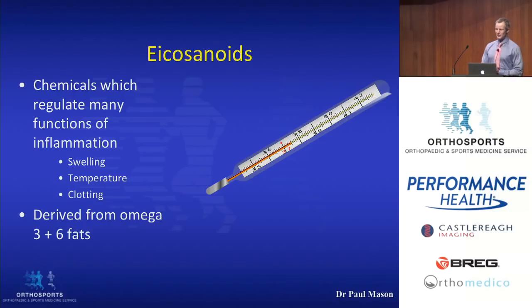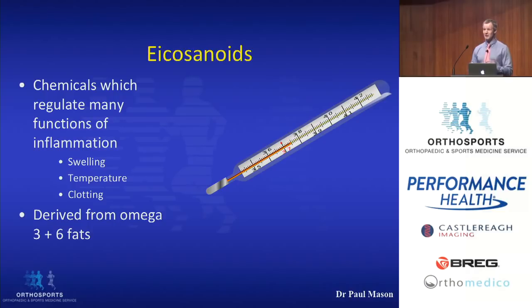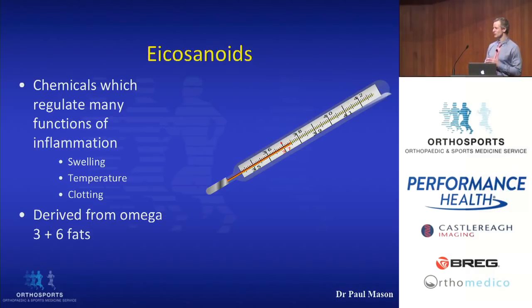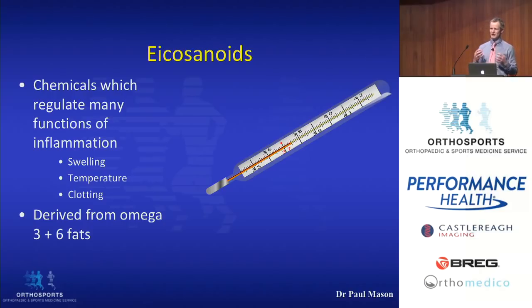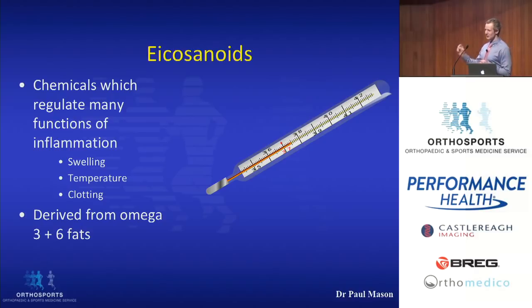As a final topic, I want to introduce you to something called an eicosanoid. This is probably a term not many of you are familiar with, but it is critically important. These are chemicals which regulate most of the inflammatory response of the body — we all hear people talk about inflammation, but very few people actually realise what it means. The meaning is related very much to these chemicals, which are derived from two fats: omega-3 fats and omega-6 fats, which we're probably all very familiar with.